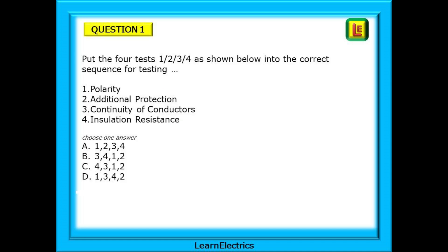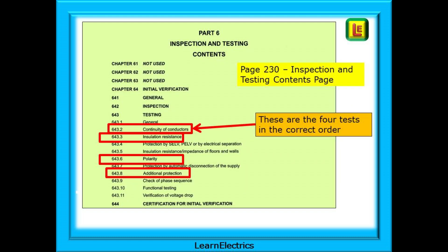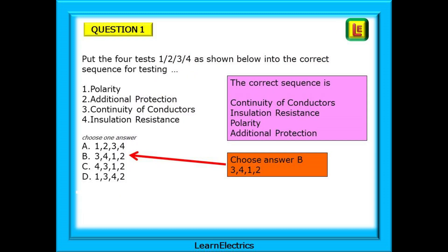The first question asks us to put four tests — 1, 2, 3 and 4 — into the correct sequence for testing, another popular exam question. For the four tests shown, put them into the correct order and then choose the answer that shows the correct order. We have all the help that we need on page 230, the Inspection and Testing Contents page. Shown there are the four tests in the correct order. Match these up to the numbers given in the question. The correct sequence is 3, 4, 1 and 2 — choose answer B.